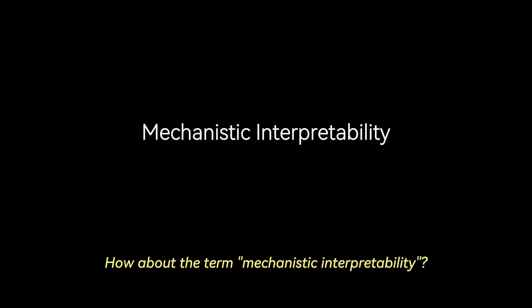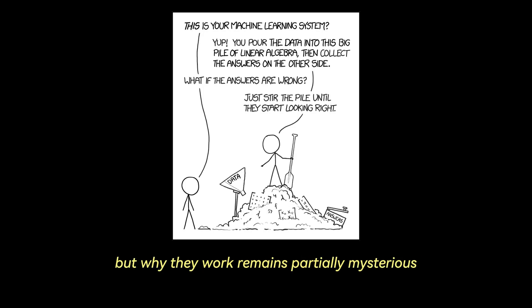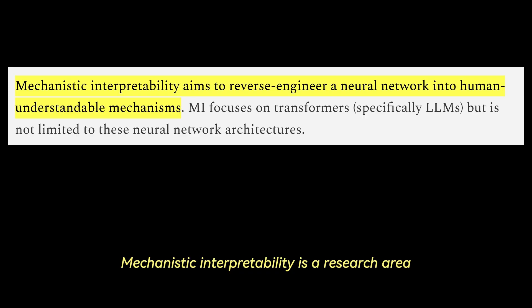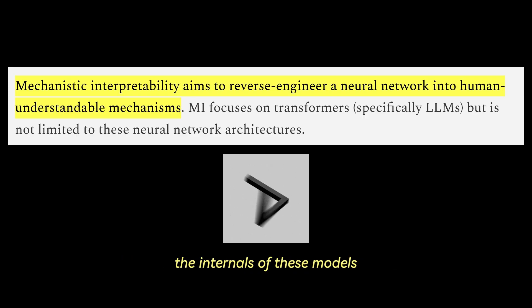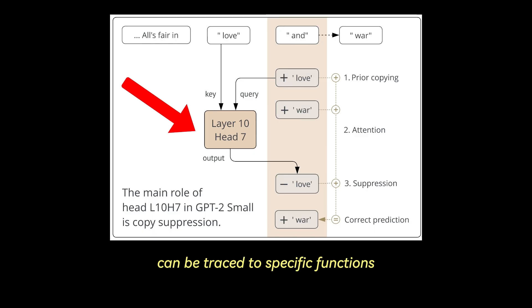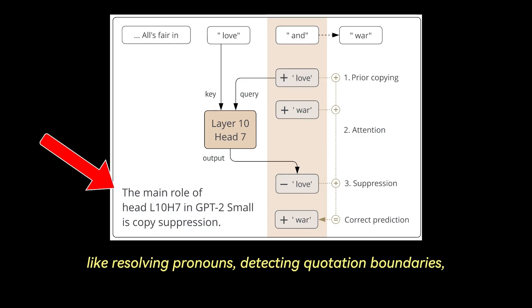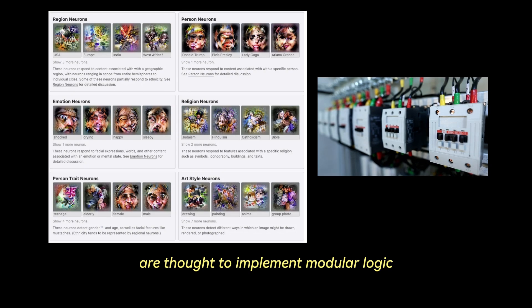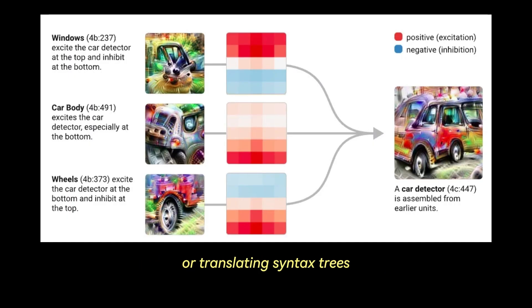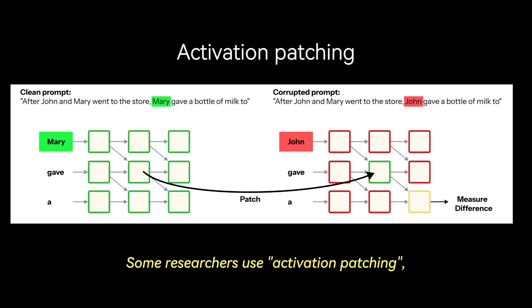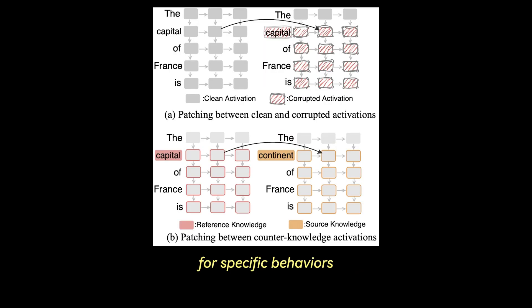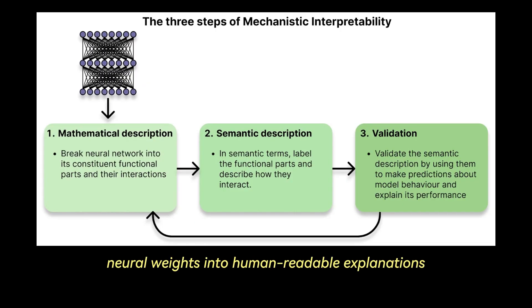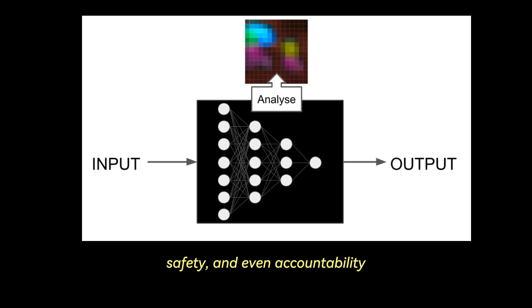How about the term mechanistic interpretability? LLMs work incredibly well, but why they work remains partially mysterious. Mechanistic interpretability is a research area focused on reverse engineering the internals of these models. For instance, attention heads can be traced to specific functions like resolving pronouns, detecting quotation boundaries, or counting brackets in code. Entire sub-networks, sometimes called circuits, are thought to implement modular logic, like performing multi-digit addition or translating syntax trees. Some researchers use activation patching, which means modifying or freezing parts of the network during inference, to isolate what components are responsible for specific behaviors. The ultimate goal is to transform opaque neural weights into human-readable explanations. And of course with this we would get better debugging, safety, and even accountability. But let's not get too sidetracked.